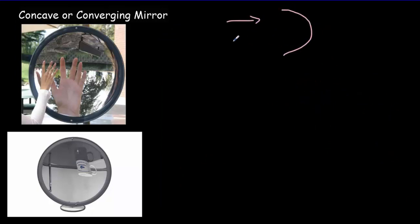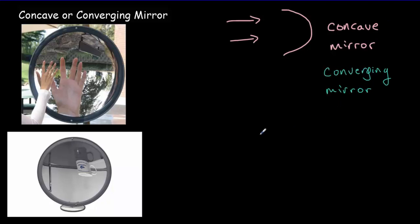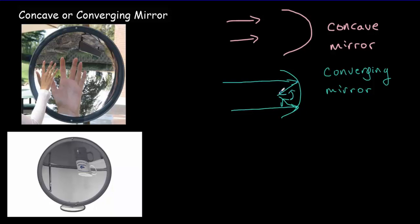Now if the mirror bends the other way — it curves inwards — you've got a cave shape. This is what's called a concave mirror. It's also called a converging mirror, because when things converge they get closer together. That's what the reflected rays do when they hit a concave mirror. Two rays coming in would reflect so they get closer together, or converge. So we have two names for this: concave or converging.